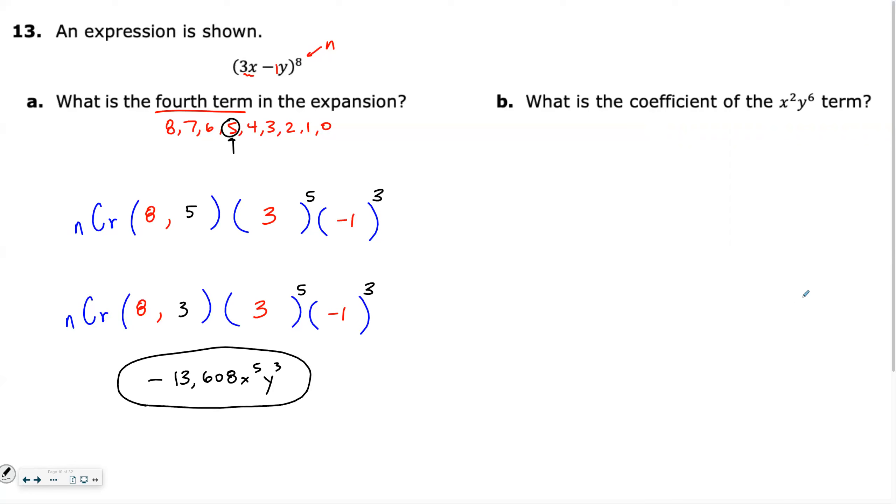Now what's different this time? It says what's the coefficient of the x squared y to the sixth term. What's the two and the six telling you? That's telling you wins and losses. So this time when you do your nCr, you don't have to count anything. This one should be easier. What was n? N hasn't changed. N is eight.